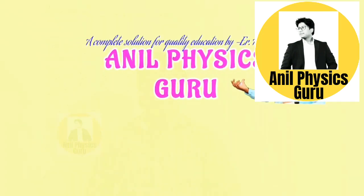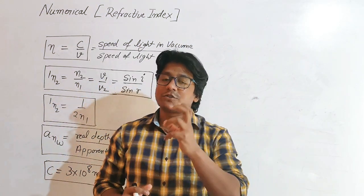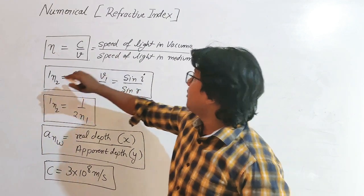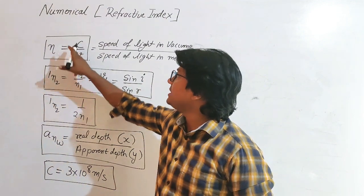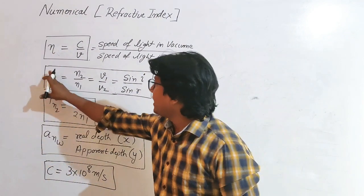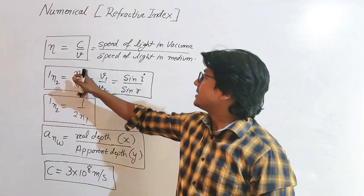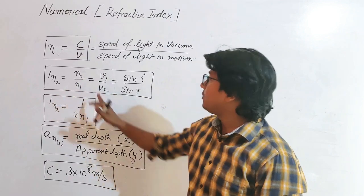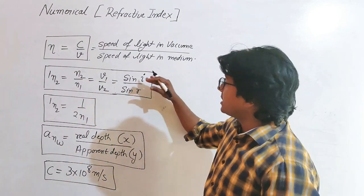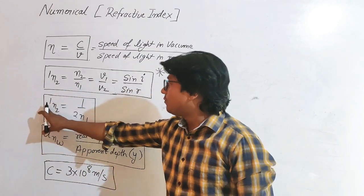Dear students, as I always suggest, to solve any numerical you have to learn the formula of the given topic. The first formula is refractive index: n is equal to C upon V, where C is the speed of light in vacuum and V is the speed of light in the medium. One more formula: refractive index of second medium with respect to first (1n2) equals refractive index of second upon refractive index of first, and is also equal to speed of light in medium one upon speed of light in medium two, and also equals Snell's law: sine I upon sine R.